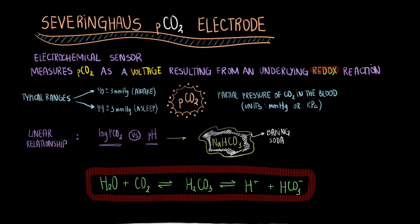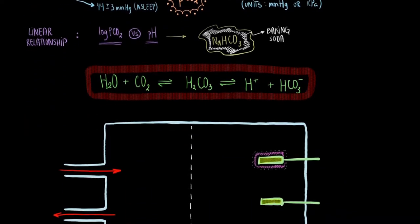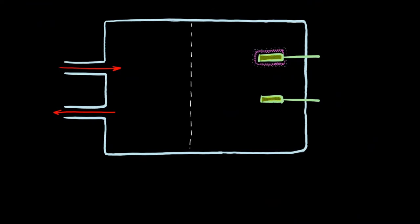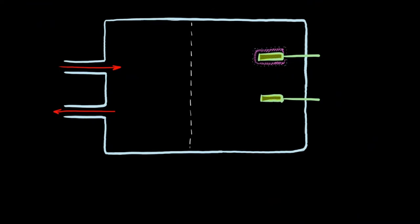Let's now break down the Severinghaus electrode system. This is a simple schematic of the electrode. On the left, we have two connections to the blood sample, or calibrating gas sample. One for flow into the chamber, and another for flow out of the chamber. Inside each chamber, we see the redox reaction happening, keeping the level of carbon dioxide in equilibrium with the level of bicarbonate ion.